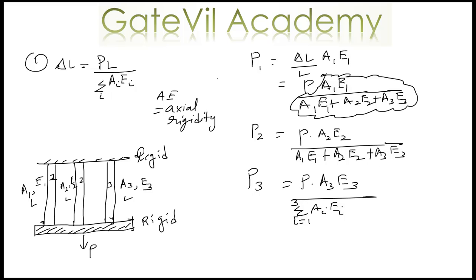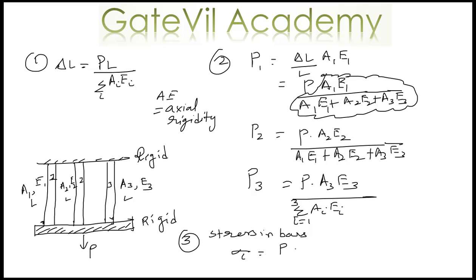We have found the change in length and the load shared by all the bars. Now we can also find out the stress in bars. The stress in each bar is nothing but the load shared by the individual bar divided by the area of that bar. In generalized form, the stress in the ith bar equals P times Ei divided by summation of Ai Ei for i equal to 1 to n.